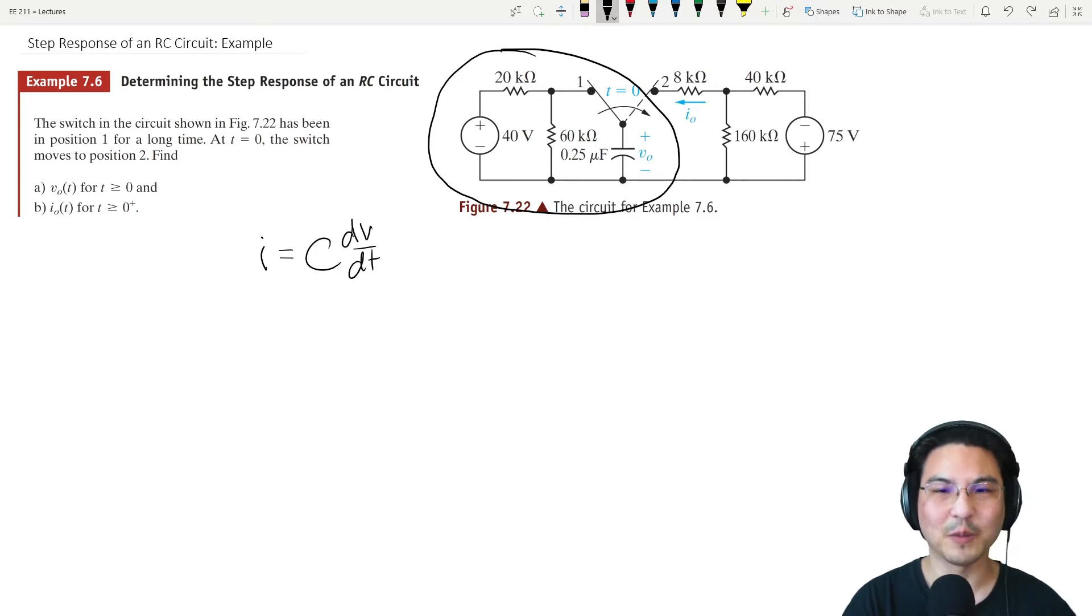So it's behaving like an open circuit. That means all the current from this source goes this way. The capacitor is not taking any of the current, so we can solve for the voltage here across the 60k resistor which is in parallel with the capacitor.